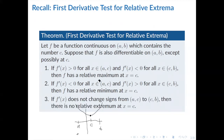Lastly, if f prime doesn't change signs, then we have no relative extremum at c. You can imagine an increasing function where the derivative is always positive, so it doesn't change signs as it moves from one interval to another. Therefore, we do not have a relative extremum at c.